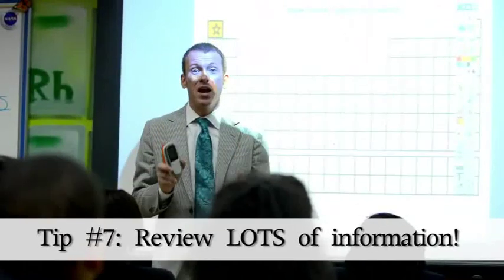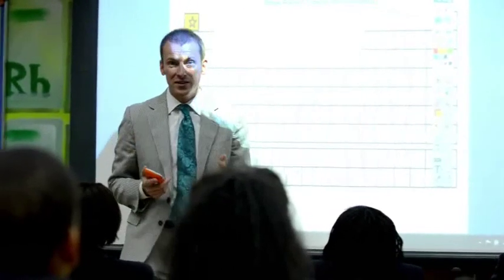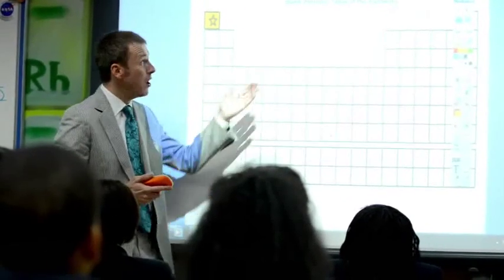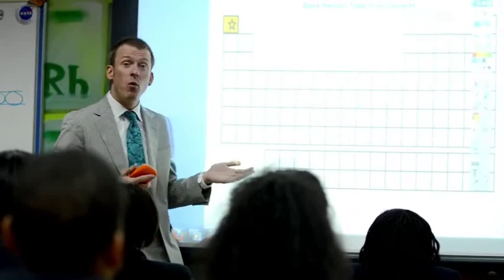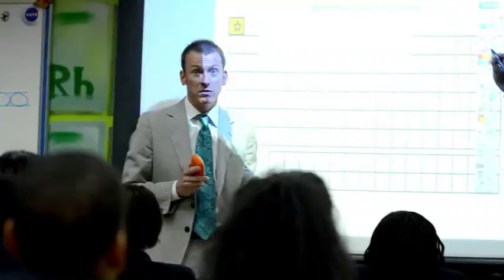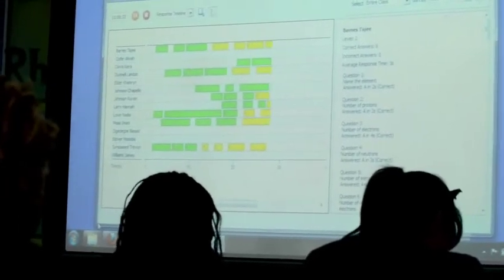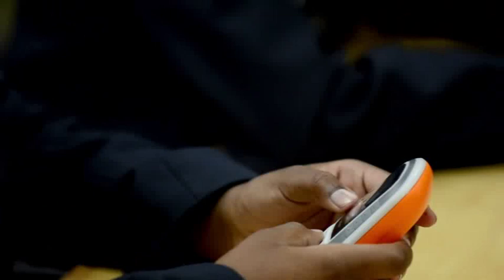Tip number seven: use the active expression to review large amounts of information. Our great science teacher Mr. Townsall teaches our students all about the periodic tables, and then what he does is enter all the information about all of the elements into the active expression. Then all he has to do is come into class, click on any element such as hydrogen, and all of the information and questions are instantly sent to the students. Mr. Townsall gets to look at the board and see exactly how much information they have mastered, and the students make sure they are prepared for any upcoming assessments.